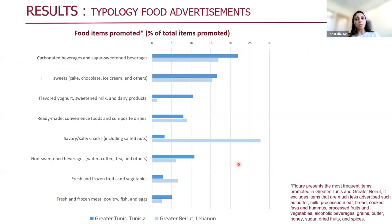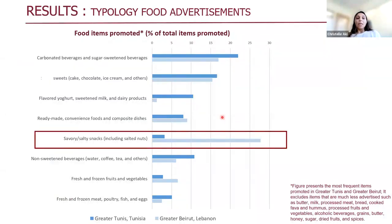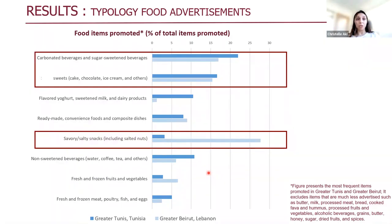We decided to zoom in on advertisements to explore the most frequent items promoted in Greater Beirut and Greater Tunis. This figure presents the frequency of different types of food items advertised in both contexts — dark blue for Greater Tunis and light blue for Greater Beirut. Savoury or salty snacks, and more specifically potato chips, were the most advertised item in Greater Beirut — around 27% of food items advertised — versus less than 5% in Greater Tunis. Apart from potato chips, carbonated beverages, sugar-sweetened beverages, as well as sweets, sugar, cake, and chocolate were the items most frequently advertised in both contexts.